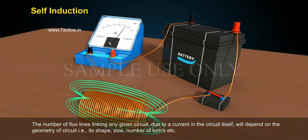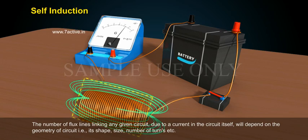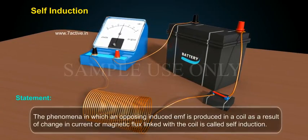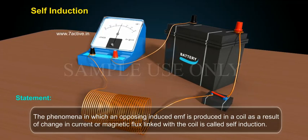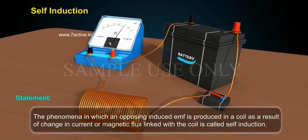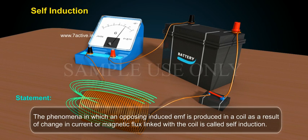The number of flux lines linking any given circuit, due to a current in the circuit itself, will depend on the geometry of the circuit, i.e. its shape, size, number of turns, etc. The phenomenon in which an opposing induced EMF is produced in a coil as a result of change in current or magnetic flux linked with the coil is called self-induction.